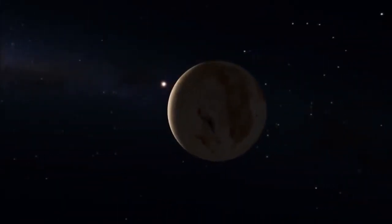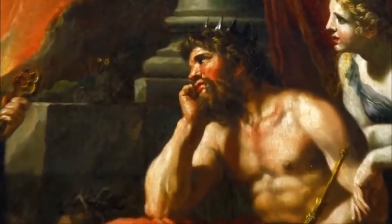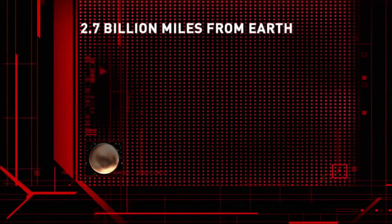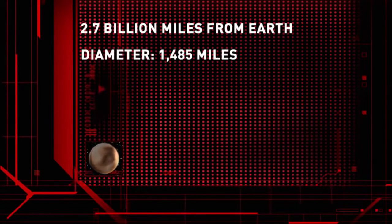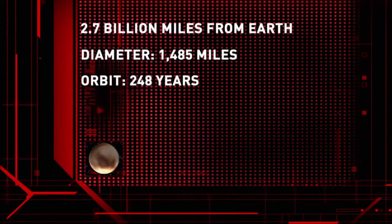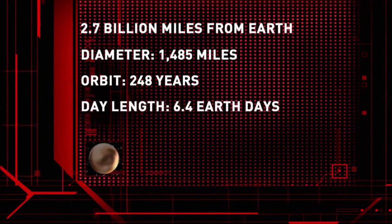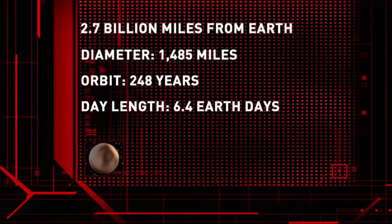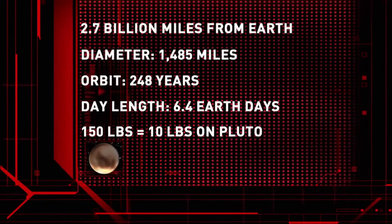Because of its great distance from the sun, Pluto takes its name from the Roman god of the underworld. At its closest, Pluto is 2.7 billion miles from Earth. Its diameter is 1,485 miles, half the width of the United States. It takes 248 Earth years for Pluto to orbit the sun, and a day on the planet is equivalent to about six and a half Earth days. A 150-pound Earthling would weigh only 10 pounds on Pluto.